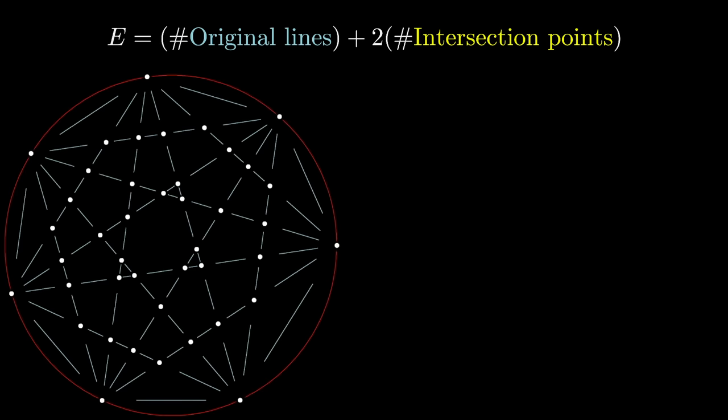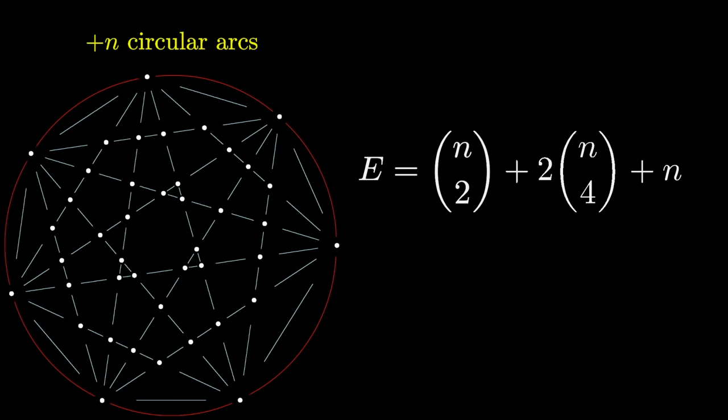And for the diagram we care about, where we started off with N choose 2 separate lines, and they're getting chopped up at N choose 4 points in the middle, you would end up with N choose 2 plus 2 times N choose 4 edges. And actually there are a few more than that. Because we're including the circle, we also need to count the N different arcs that sit on the outside of this diagram.